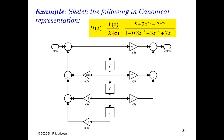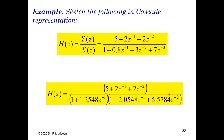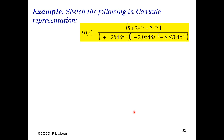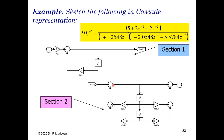An example question may give a transfer function and ask you to sketch it in cascade representation. This is straightforward: factorize the denominator, then optionally factorize the numerator, and break the function into a series of multiplications. Section 1 can be one factor, multiplied in cascade with section 2 as the remainder, and so on.